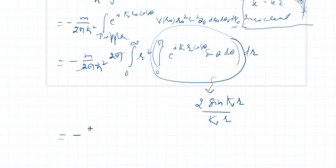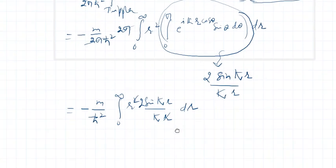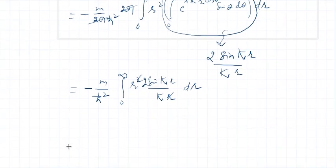as I did this type of integral in the earlier lecture, so it is minus m over h cross square kappa r square. It is 0 to infinity, it is r square 2 sin kappa r over kappa r. This r will cancel out with it, and kappa can be taken outside, and it is integral over r kappa r. So therefore f of theta,